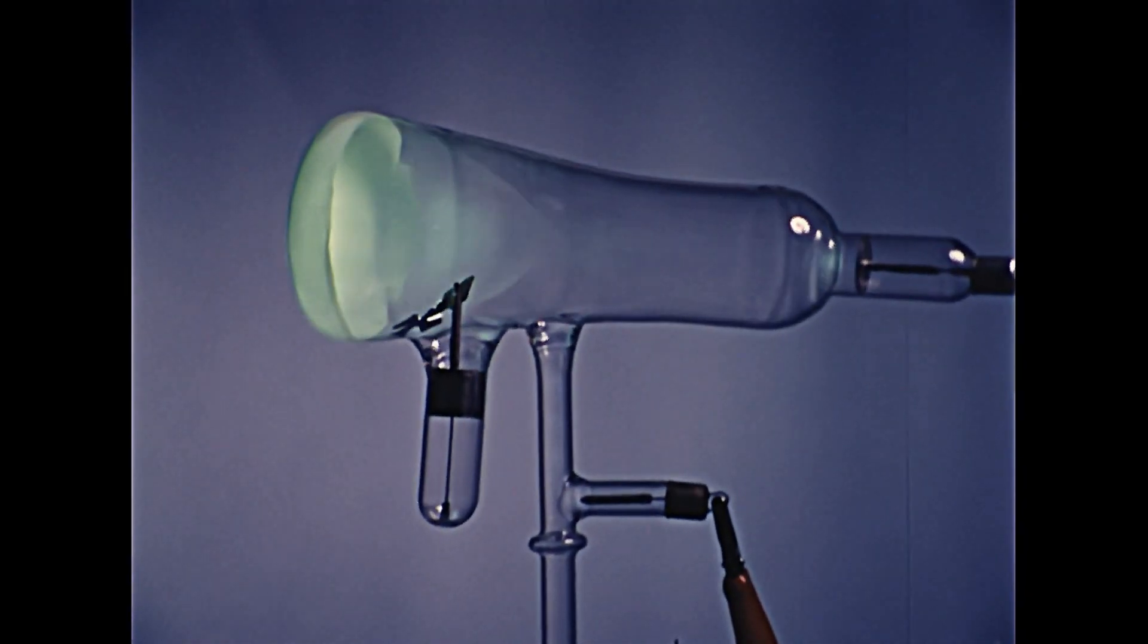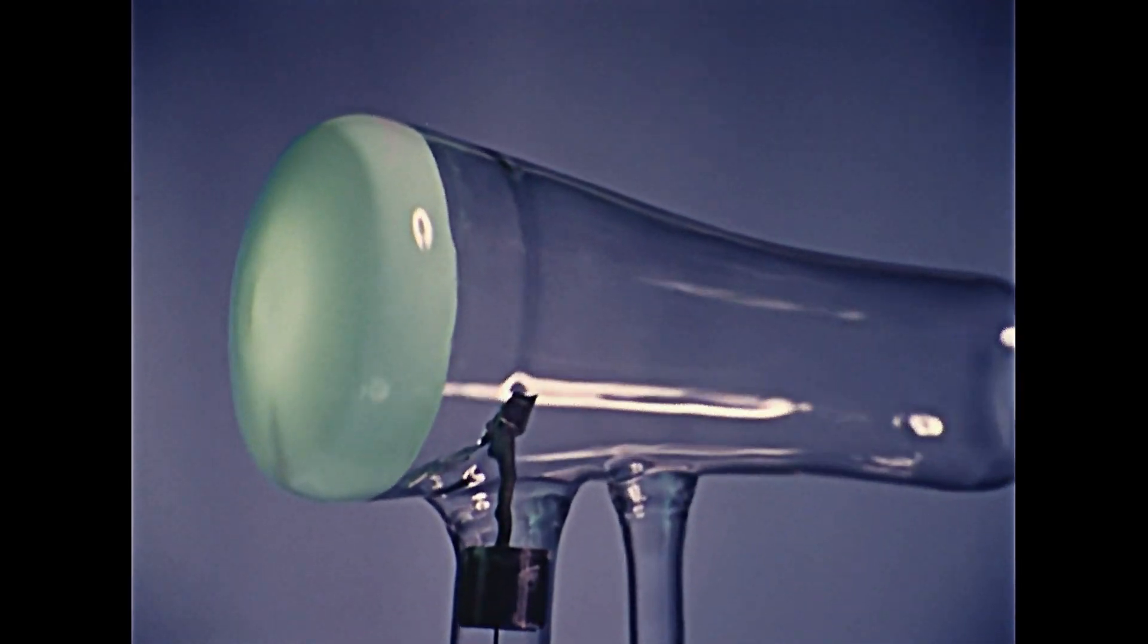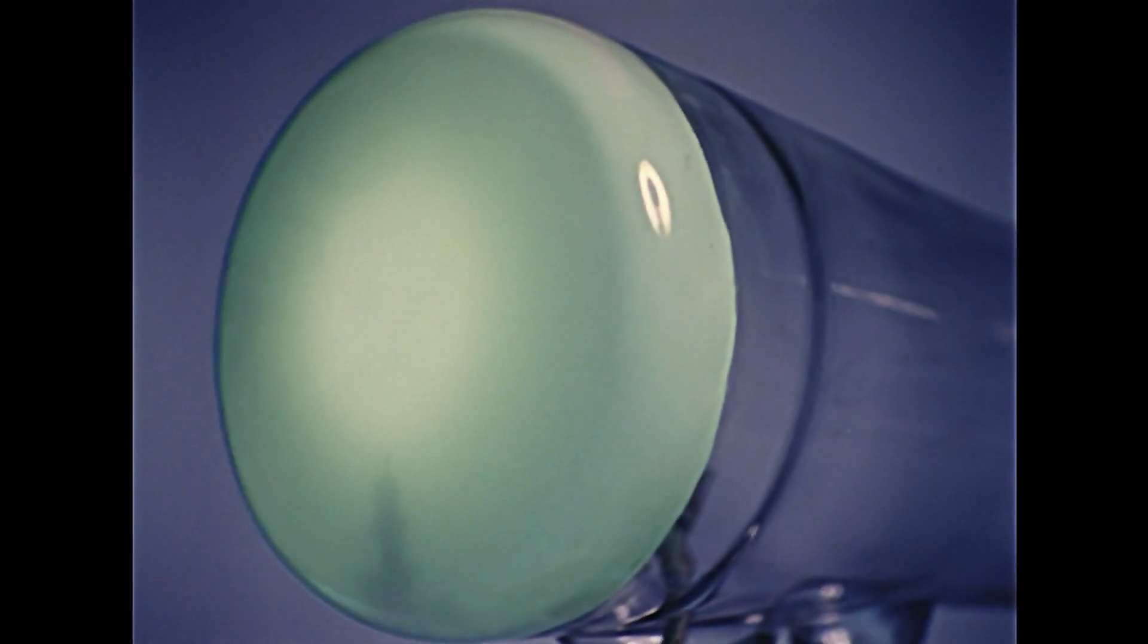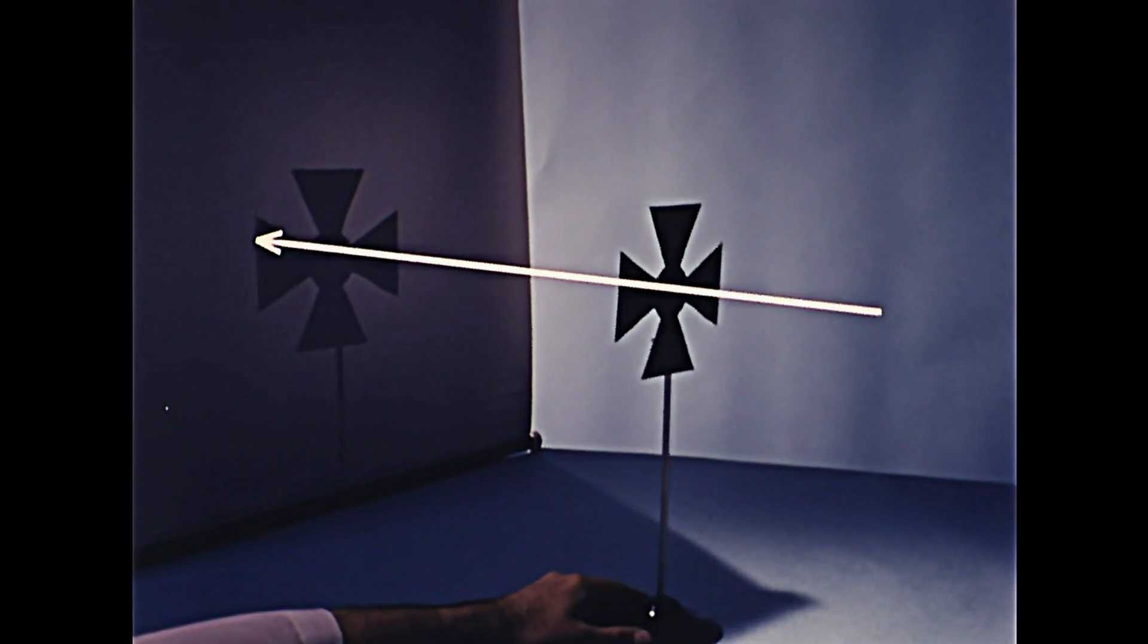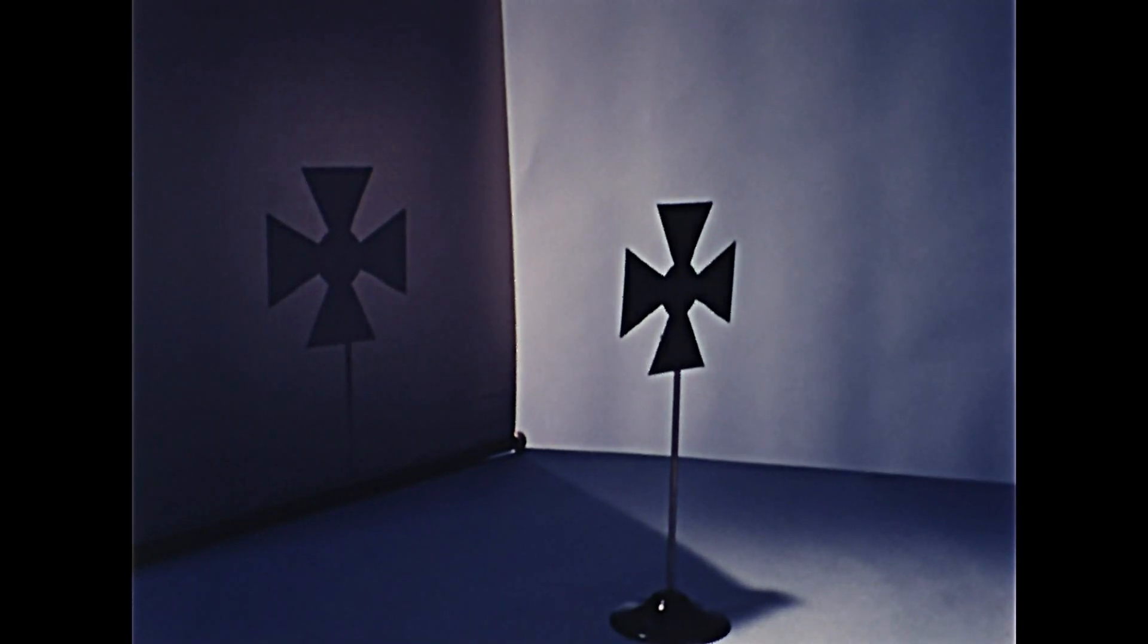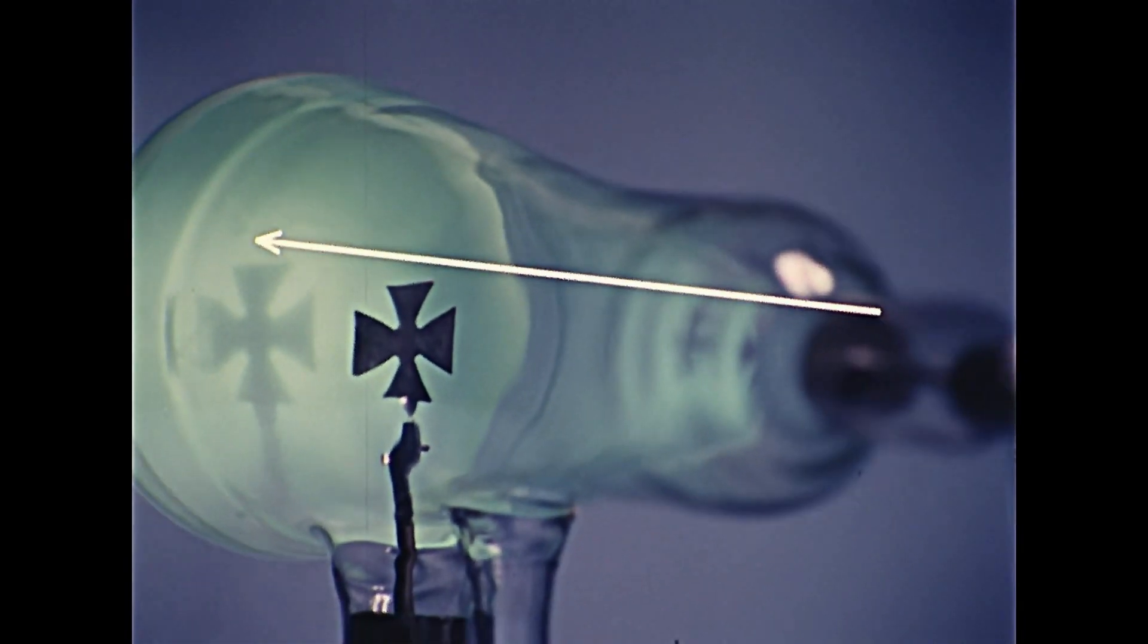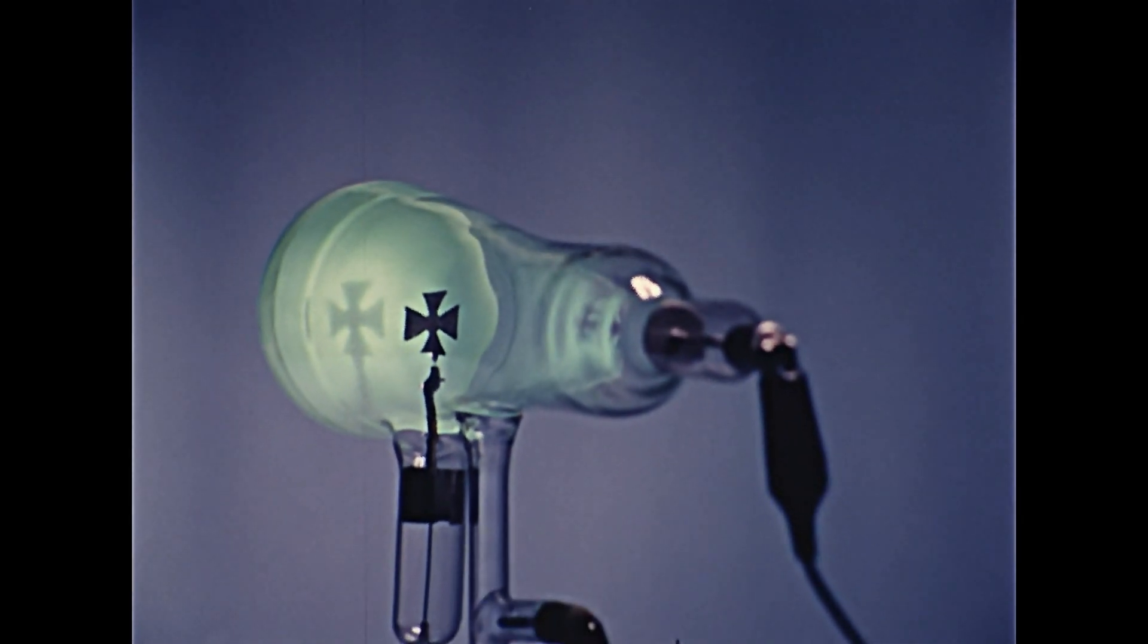This one was designed to test if cathode rays, now known as electrons, travel in straight lines. The light on this cross travels in straight lines. Therefore, the shadow is shaped like the cross. It was learned that in this respect, cathode rays and light are similar. Both travel in straight lines.